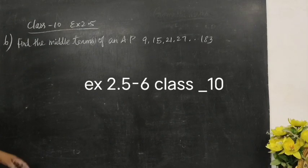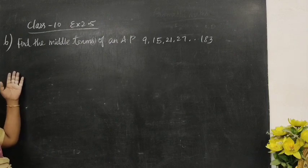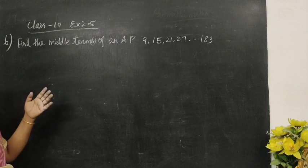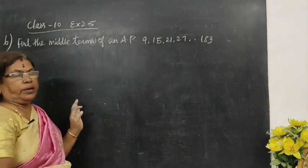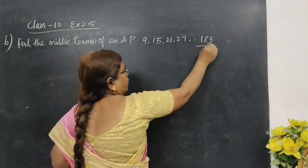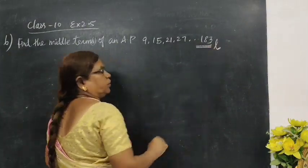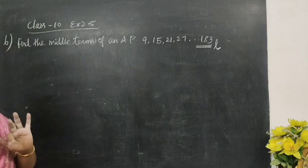So, in this lesson, you are seeing Exercise 6.5 for Class 10, Question number 16: Find the middle terms of an AP 9, 15, 21, 27...183. You are given the last term. In the last term, you have to find n.